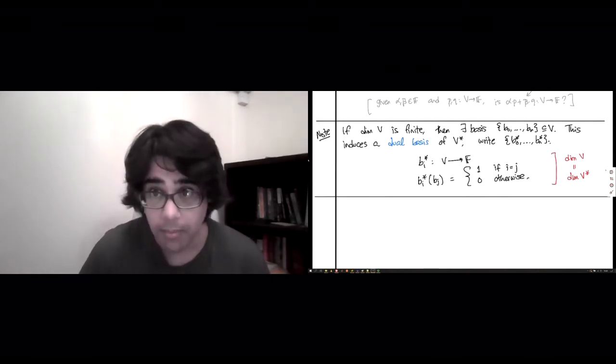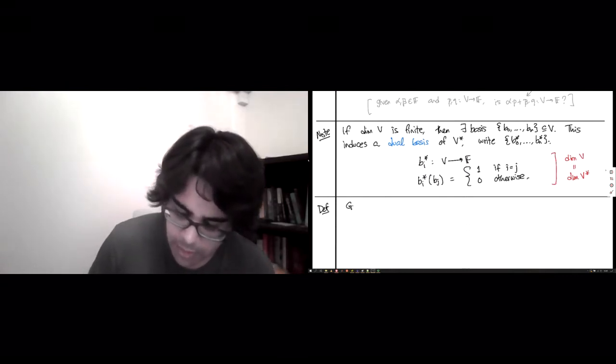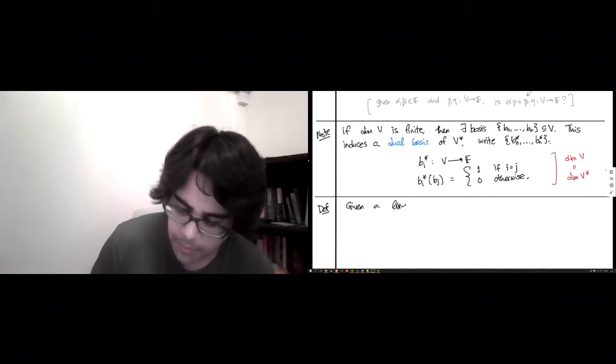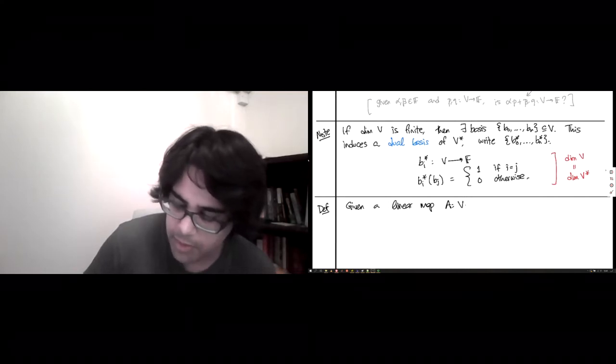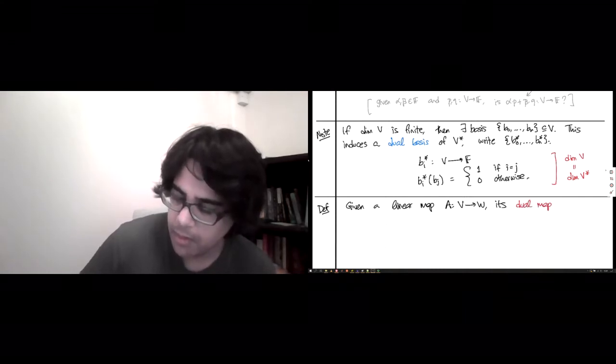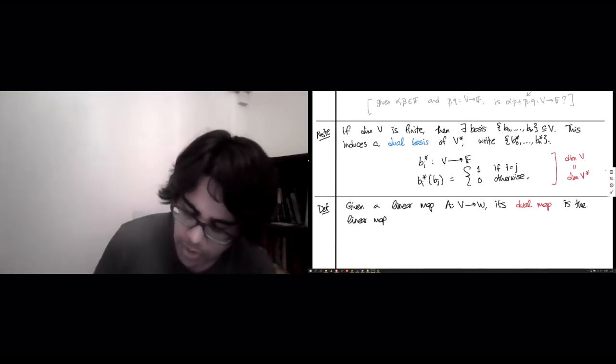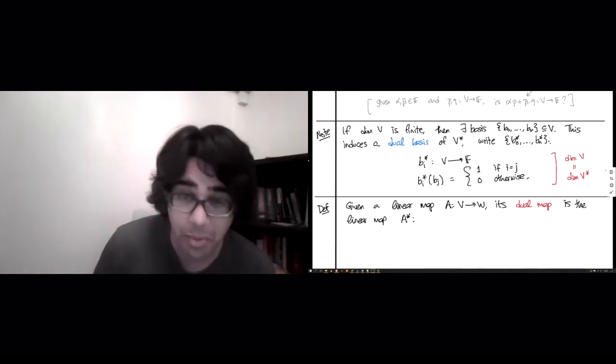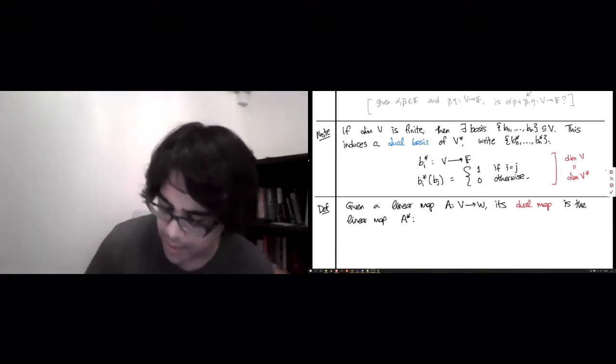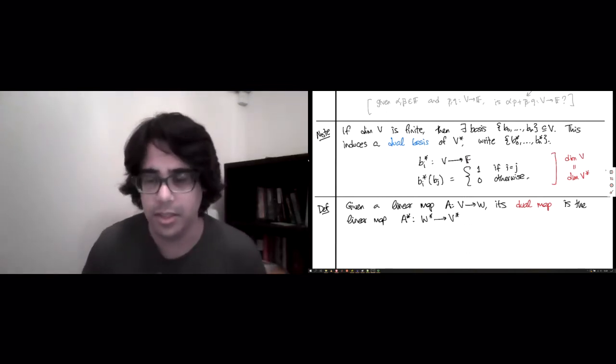Let's go on and see what happens to linear maps in the face of duality. Given a linear map A from V to W, its dual map, which I'll call A star, and here's the important bit, really this is the source of all the duality, is that this map goes from W star to V star, rather than in the direction you might expect, which is V star to W star.